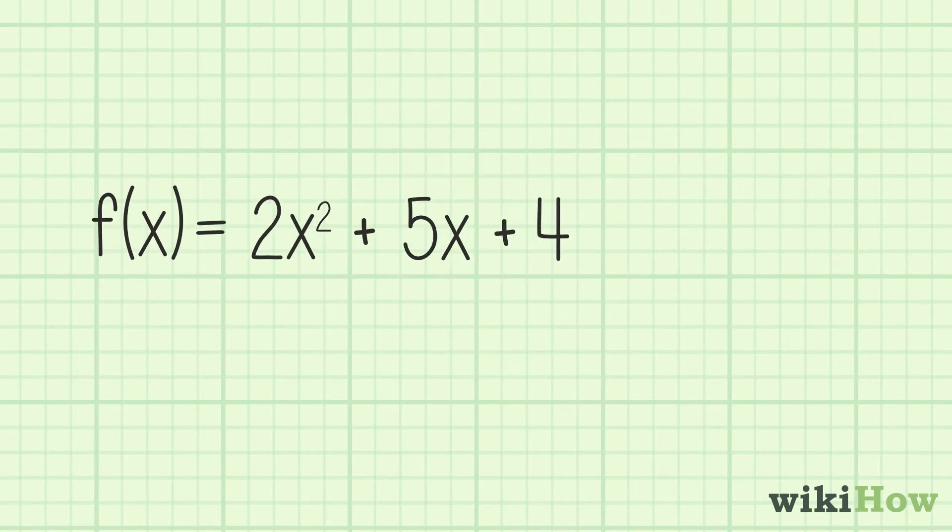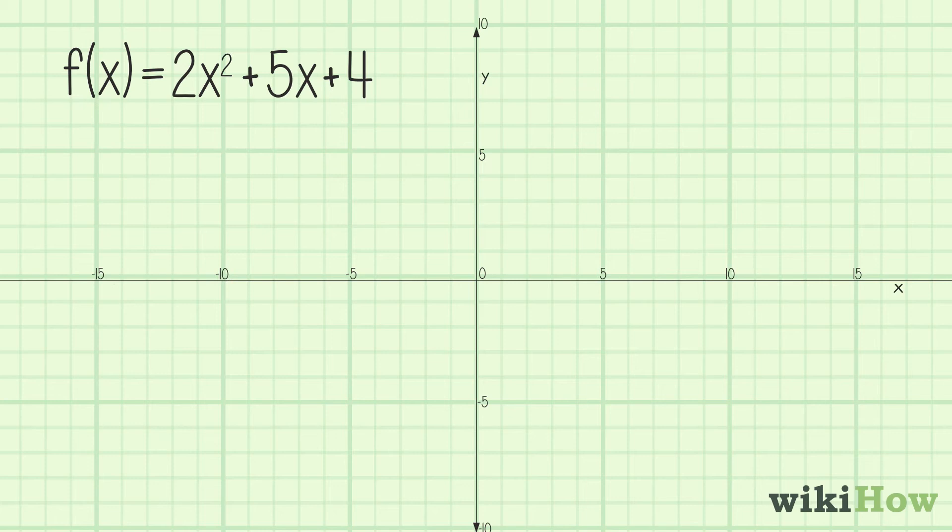Now, figure out which direction the parabola opens by checking if a, or the coefficient of x squared, is positive or negative.